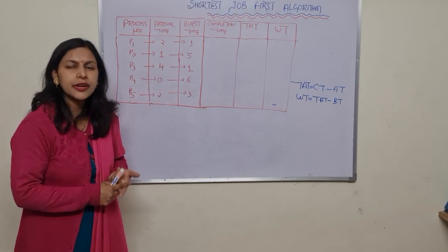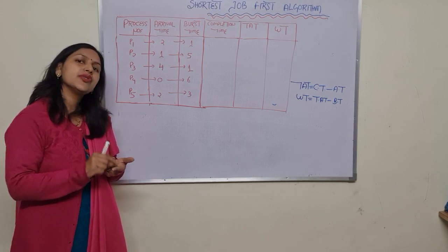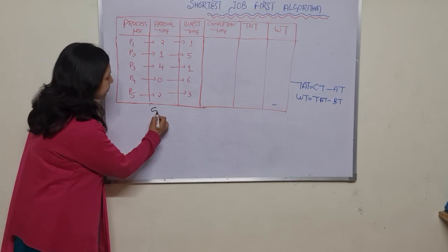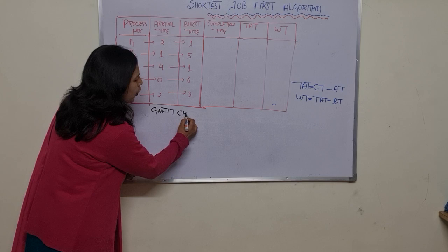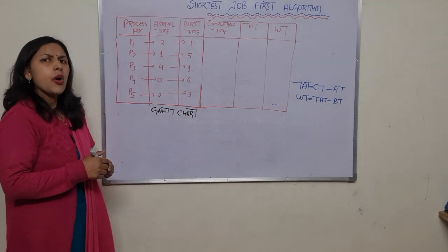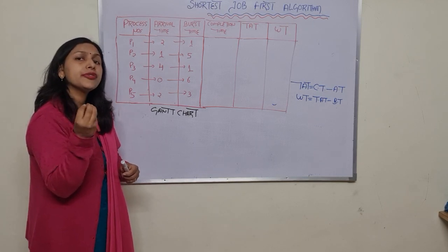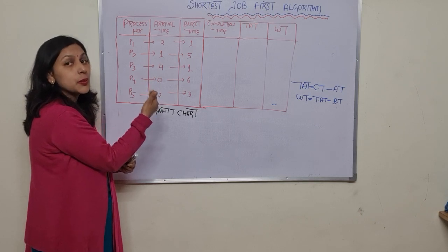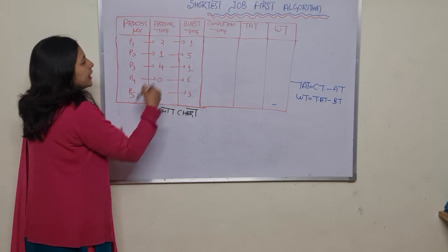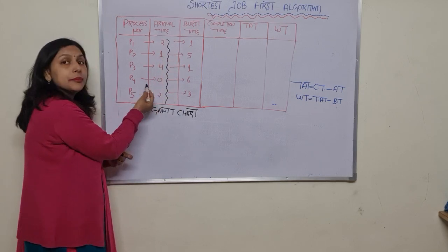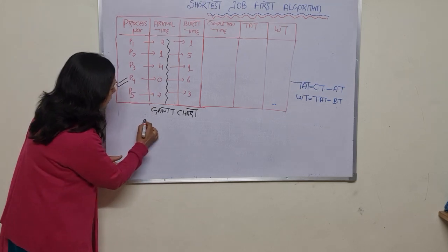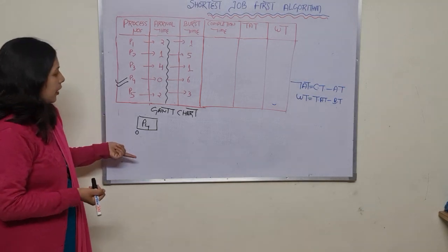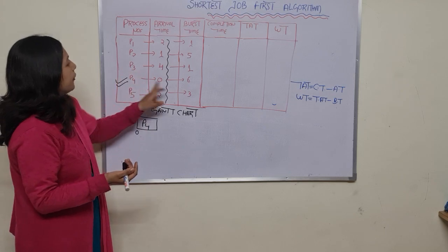Once you draw the Gantt chart, you can easily find the completion time, average turnaround time, and average waiting time. To draw the Gantt chart, the CPU starts from time zero. Checking arrival times, process P4 arrives first at zero, so P4 is written first. It executes for 6 quantum of time.